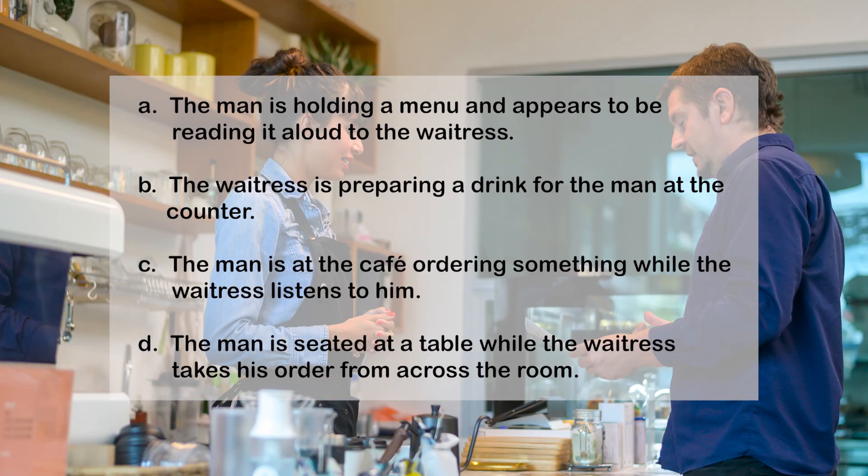A: The man is holding a menu and appears to be reading it aloud to the waitress. B: The waitress is preparing a drink for the man at the counter. C: The man is at the cafe ordering something while the waitress listens to him. D: The man is seated at a table while the waitress takes his order from across the room. Answer: C — The man is at the cafe ordering something while the waitress listens to him.